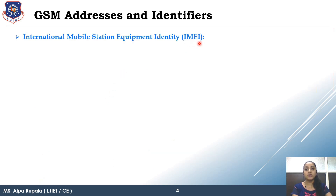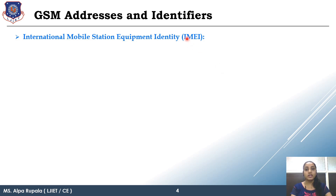Secondly, IMEI number — that is International Mobile Station Equipment Identity. Every mobile device is having a unique identification number, and that identification number is provided by the manufacturer of that mobile device. So ultimately IMEI number is provided by your manufacturer and this number uniquely identifies your mobile device.